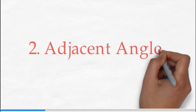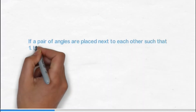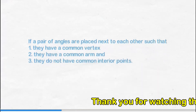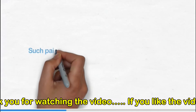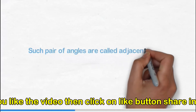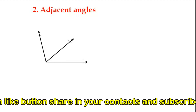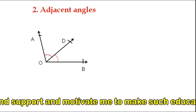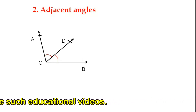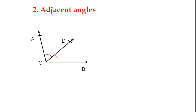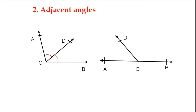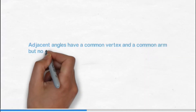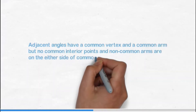Second: adjacent angles. If a pair of angles are placed next to each other such that they have a common vertex, a common arm, and they do not have common interior points, such a pair of angles is called adjacent angles. Here angle AOD and angle BOD is a pair of adjacent angles. OD is the common arm, OA and OB are on opposite sides of OD, and nothing is common except the arm OD. Adjacent angles have a common vertex and a common arm but no common interior points, and the non-common arms are on either side of the common arm.